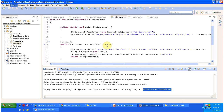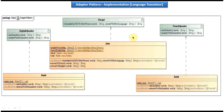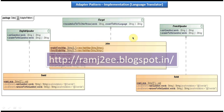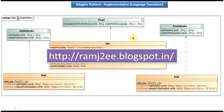This is the sample code of the Adapter Design Pattern. I think now you understand this language translator class diagram and have understood the Adapter Pattern. This is about Adapter Design Pattern Implementation. I have put all my sample code on my blog called Romjet — you can visit my site and get the sample code. Thanks for watching. Bye.